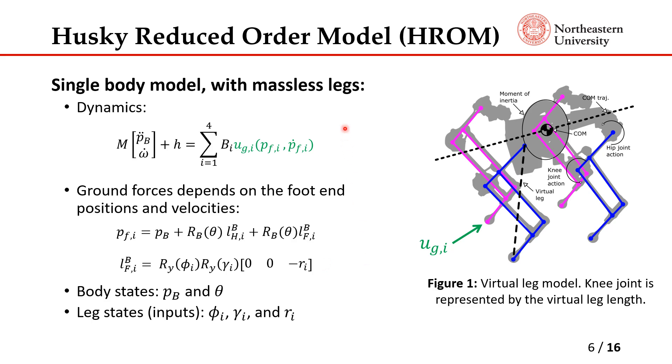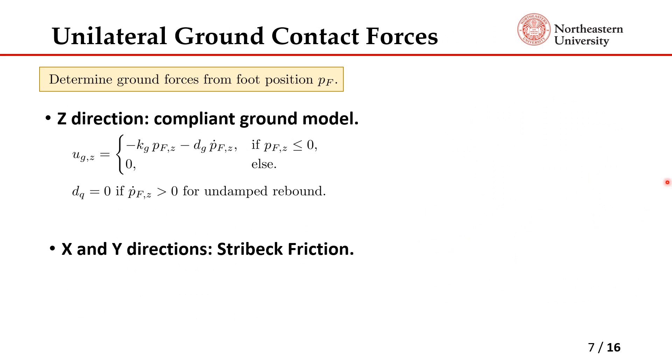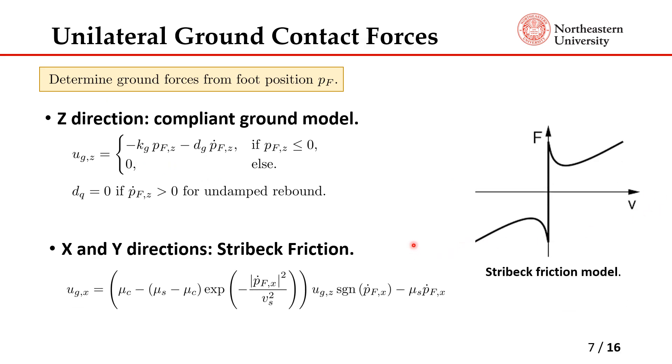In this slide we'll be showing the ground forces equation model. In this case we have the ground forces using Striebeck friction and compliant ground model. In the Z direction, this will determine the normal forces acting on the system and it's determined by a spring and damping model, a very large spring and damping model. When the foot is touching or below the ground, it will be subjected to a very large spring and damping forces depending on the foot end position and velocities. In the X and Y directions, we are using a Striebeck friction model shown over here, which is a function of the normal force and the friction coefficients to simulate the forces in X and Y directions. This represents the static friction component and this is the Coulomb friction, and the slope will be the viscous friction component.